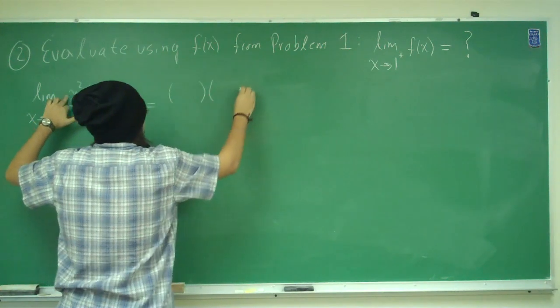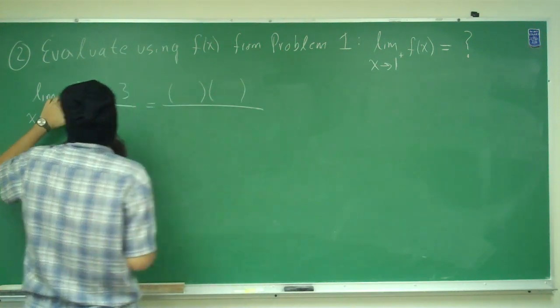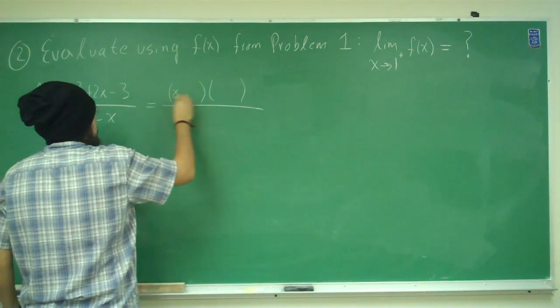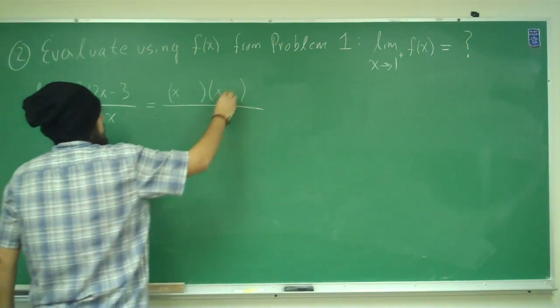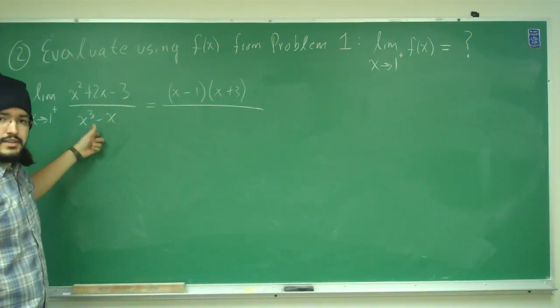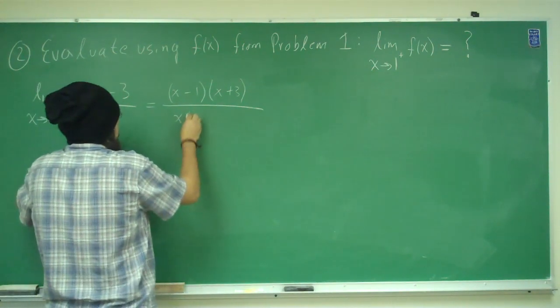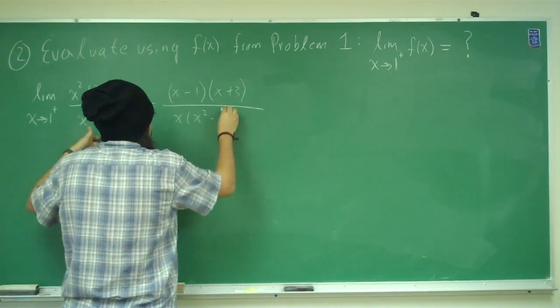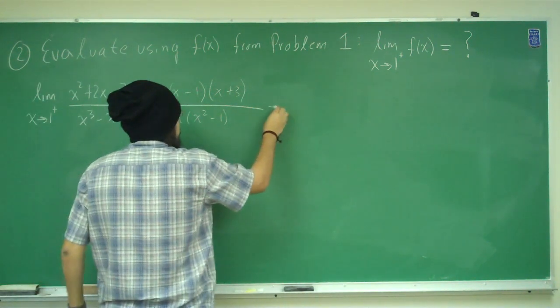Okay, so we factor this expression, we're left with x here, x here, plus 3, minus 1. This one can be factored, x, x squared minus 1. Okay, let's keep factoring this.